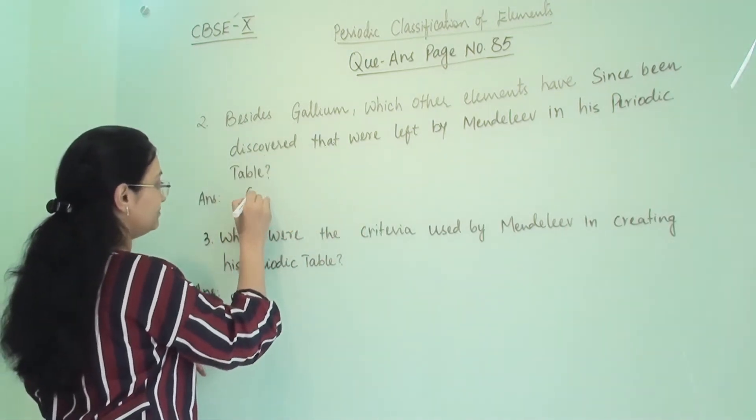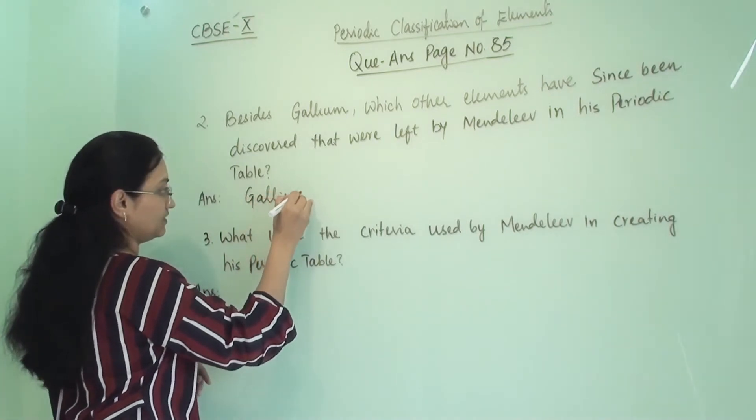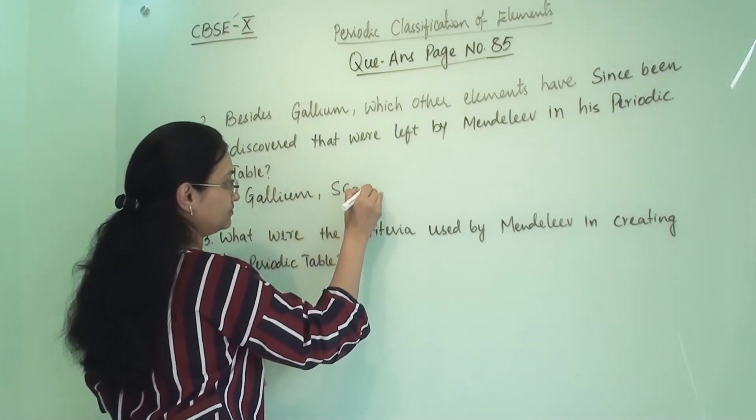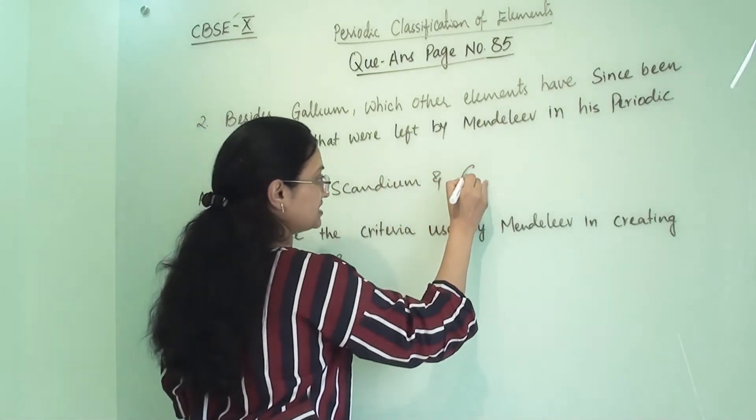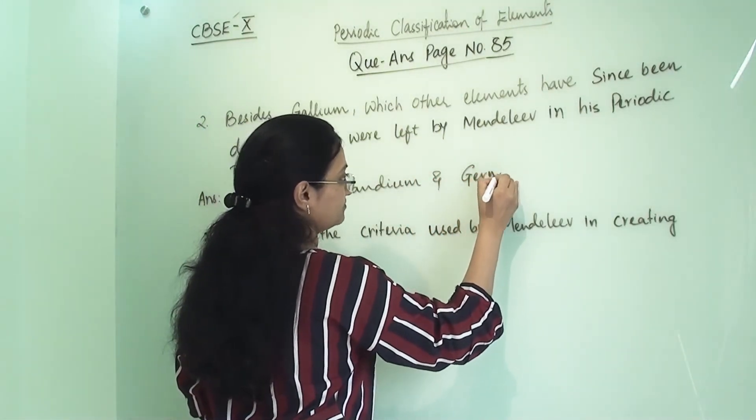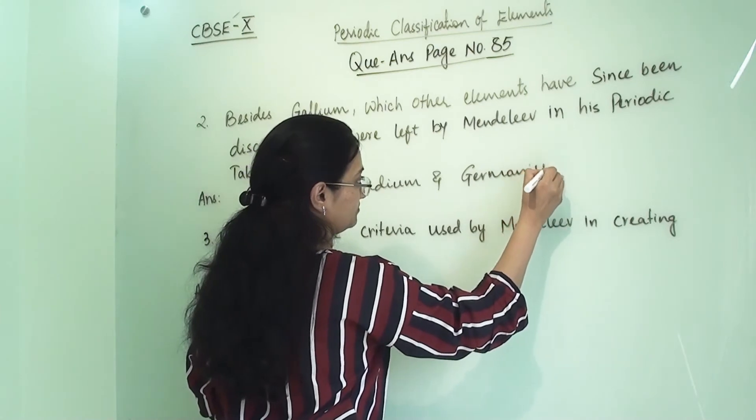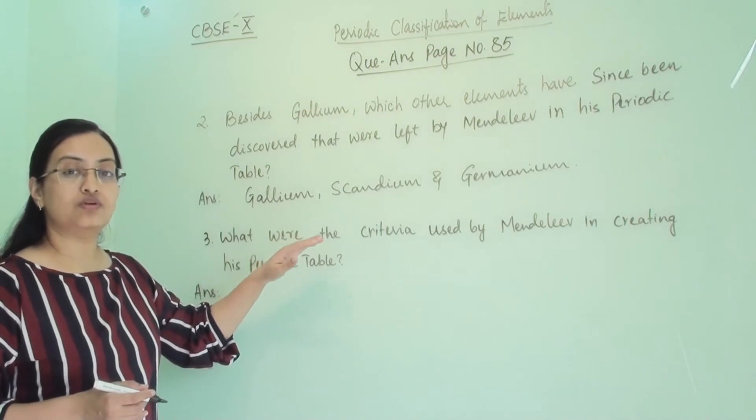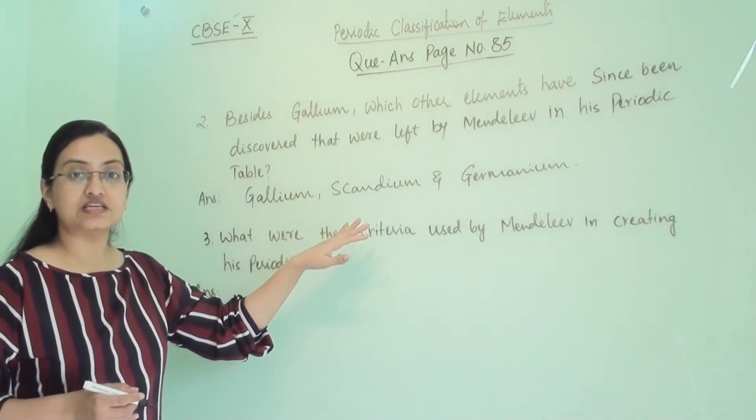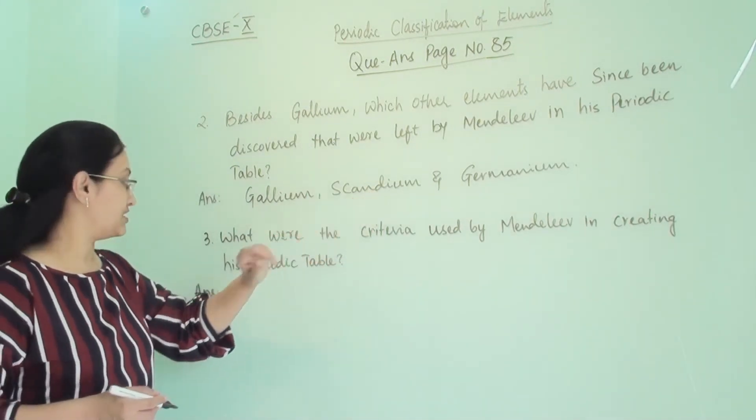So they were gallium, scandium, and the last one is germanium. These were the three elements which have been found out through the vacant places left in Mendeleev's periodic table.